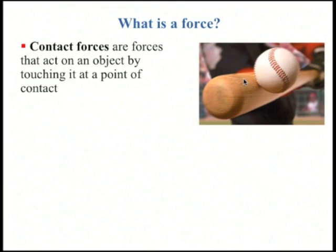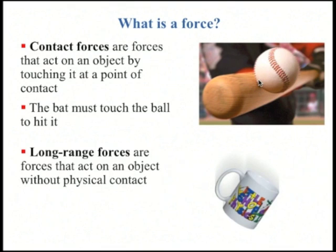There are two kinds of forces. A contact force is a force that acts on an object by touching it at a point of contact, like a baseball actually touches the baseball bat. And there are long-range forces — forces that act without physical contact, such as the earth pulling a cup towards it without touching it.